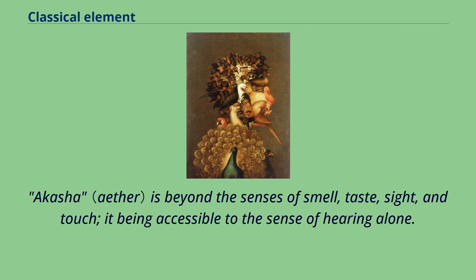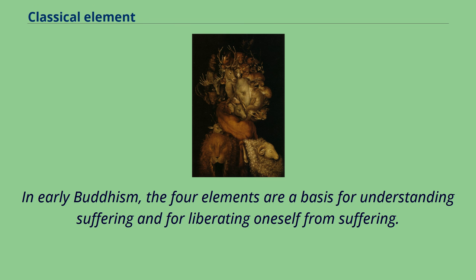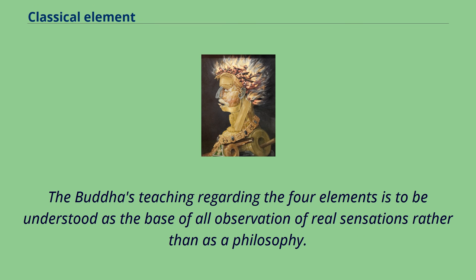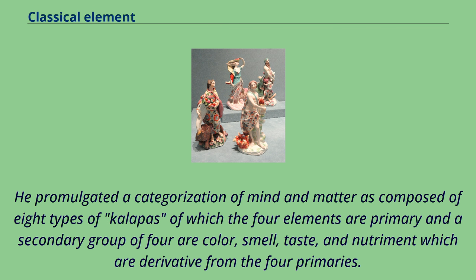In the Pali literature, the Mahabhuta or four great elements are earth, water, fire, and air. In early Buddhism, the four elements are a basis for understanding suffering and for liberating oneself from suffering. The earliest Buddhist texts explain that the four primary material elements are solidity, fluidity, temperature, and mobility, characterized as earth, water, fire, and air, respectively. The Buddhist teaching regarding the four elements is to be understood as the base of all observation of real sensations rather than as a philosophy. The four properties are cohesion, solidity or inertia, expansion or vibration, and heat or energy content. He promulgated a categorization of mind and matter as composed of eight types of kalapas, of which the four elements are primary, and a secondary group of four are color, smell, taste, and nutriment, which are derivative from the four primaries.